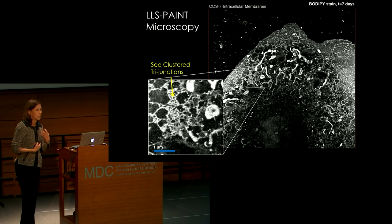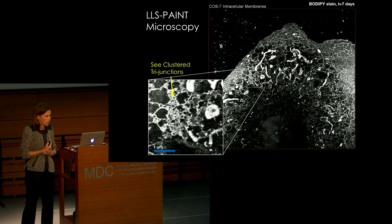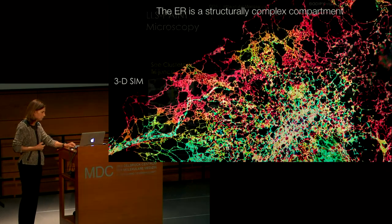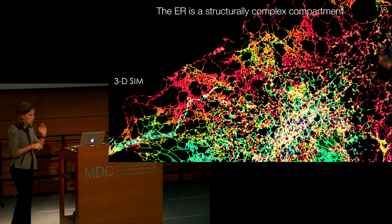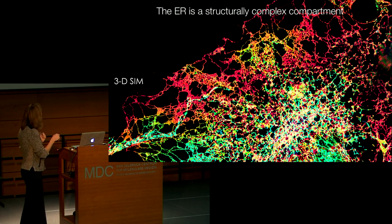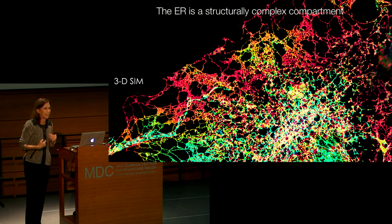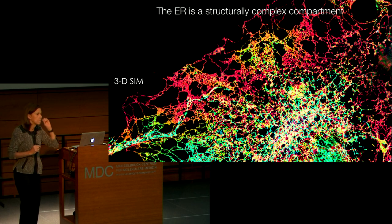This emphasizes how important it is to use the appropriate microscopy approach if you're going to really understand how structures within cells are arranged. Here's a 3D structural illumination microscopy image of the endoplasmic reticulum, color-coded to give a 3D perspective of an ER resident protein. These techniques tell us that the ER is an incredibly structurally complex compartment, and one that we are only beginning to understand in terms of how its structure relates to specific functions.